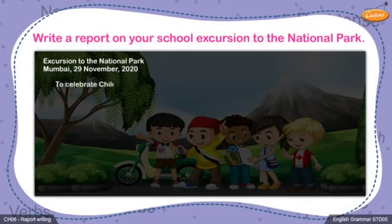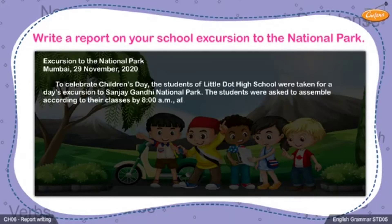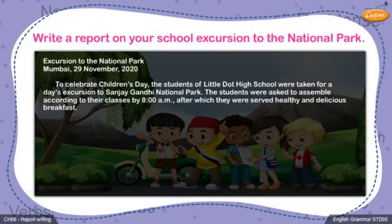To celebrate Children's Day, the students of Little Dot High School were taken for a day's excursion to Sanjay Gandhi National Park. The students were asked to assemble according to their classes by 8 a.m., after which they were served healthy and delicious breakfast. The second paragraph must mention all the details of the excursion — the places in the park that the students visited, the other activities planned out for the children, game events held, etc.